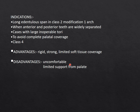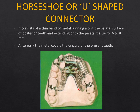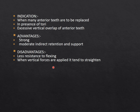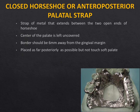Advantages of the horseshoe design include rigidity and limited soft tissue coverage. Disadvantages are that it is uncomfortable and provides limited support. There is no posterior closed window, so under heavy occlusal loading or bruxism the horseshoe-shaped palatal strap may flex laterally, reducing its rigidity. When vertical forces are applied it tends to straighten.